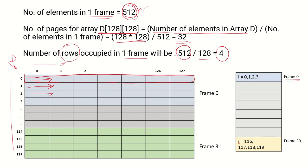So if this is frame 0 then from i which is the row number the first 4 rows can be stored, then the next 4 rows and so on. In 30 frames we will have 116 to 119. So in each frame 4 rows can be stored.